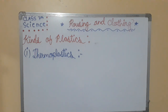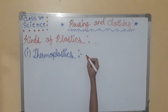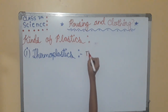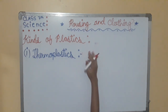Good evening everyone, welcome to the YouTube channel Just Information. I hope you all are fine. Today we will learn kinds of plastics. First, thermoplastics. Thermoplastic articles are made by gentle heating and then molding.